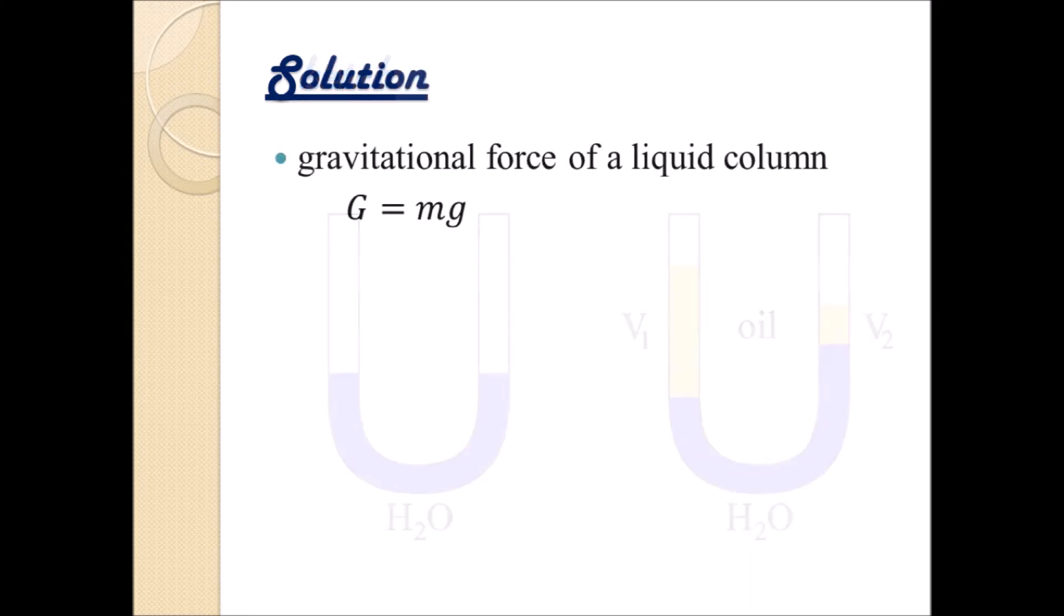We do know that the gravitational force of a liquid column, of any liquid column, can always be calculated as G equals M times g. M is the mass of the respective column, and the small g is the gravitational constant, which we know for calculational purposes. It's 9.81 meters per second squared.